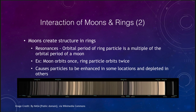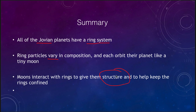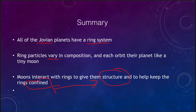Let's finish up with our summary. All Jovian planets have a ring system, but the ring particles can vary in composition and each orbits the planet like a tiny moon. The moons interact with the rings to give them structure and to help keep the rings confined — it is because of the moons that we see the structure, the well-defined small rings, and the well-defined edges of other rings. That concludes our lecture on planetary rings. We'll be back again next time for another topic in astronomy. Have a great day everyone, and I will see you in class.